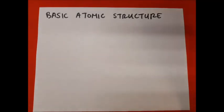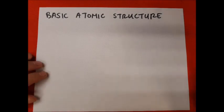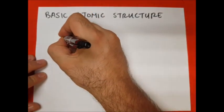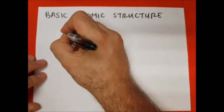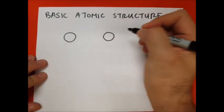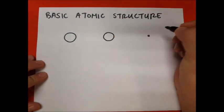In this video we're going to be speaking about basic atomic structure. First of all, let's talk about subatomic particles. Atoms, which are the basic building blocks of matter, are made up of three distinct particles: protons, neutrons, and electrons.